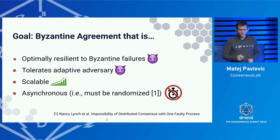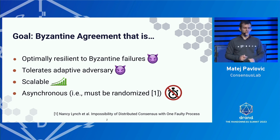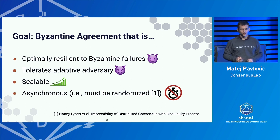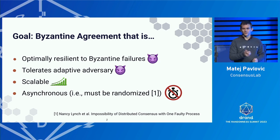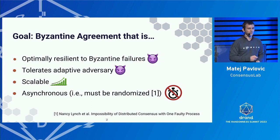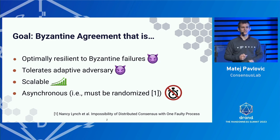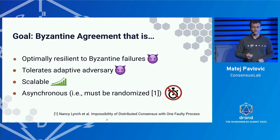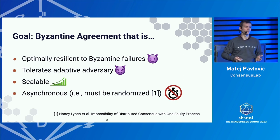What is the goal? The goal of this project is that we want to have a Byzantine agreement that is optimally resilient to Byzantine failures — that means we tolerate as many Byzantine nodes in the system as is theoretically possible, or at least come close to it asymptotically. We want to tolerate an adaptive adversary. We want it to be scalable and asynchronous, which means by the famous FLP result that the algorithm needs to be randomized, because deterministic algorithms for consensus cannot exist in that model.